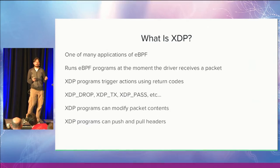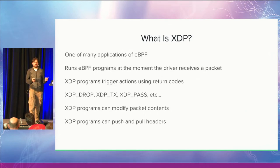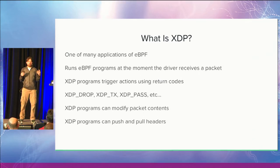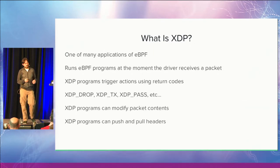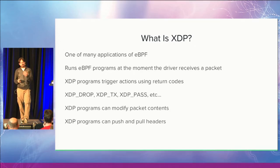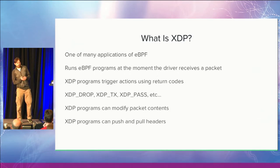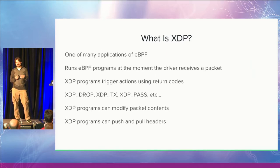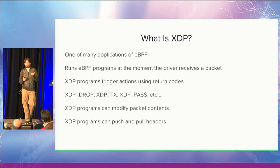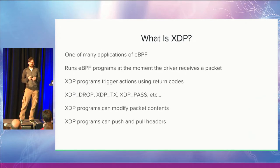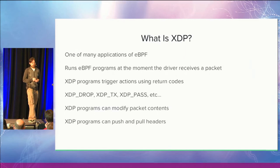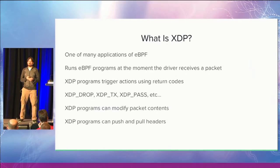By definition, XDP is the fastest way we can process networking packets. XDP programs make a determination and return a result code that determines what happens with the packet: you can drop the packet, transmit it out the same interface, or pass it up into the rest of the networking stack — and more codes will be coming. XDP programs can also modify packet contents; for example, switching MAC addresses, or more sophisticated things like building tunnel headers, pushing and pulling headers to implement tunneling, which is important for load balancing.